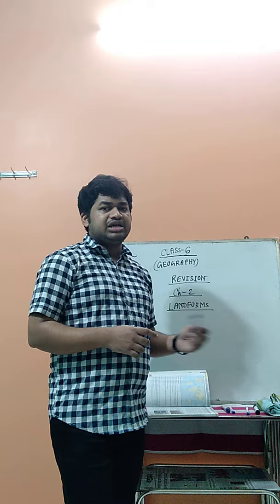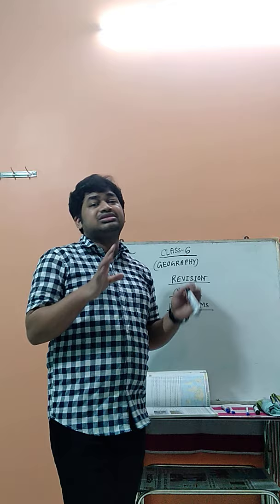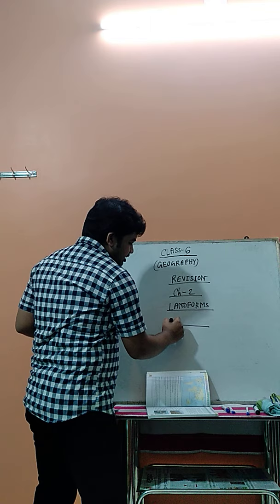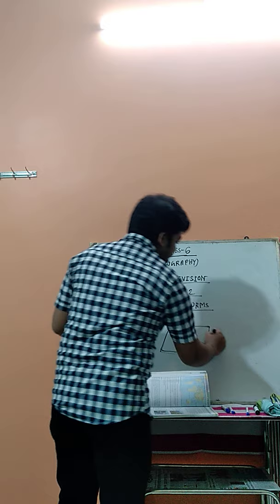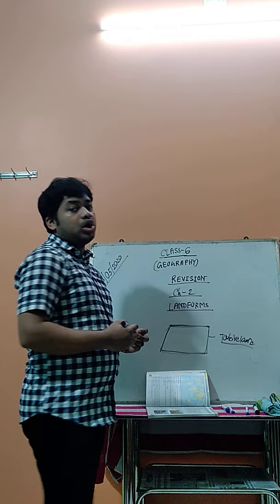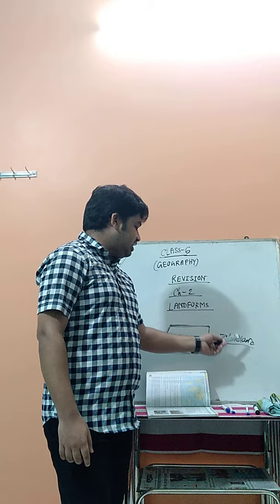What is a plateau? The plateaus are of different types. The plateaus are not all the same. When a plateau is formed, the middle portion is flat on top and both the sides are sloping areas — that is the plateau portion. That is why the plateau is also known as the tableland. The topmost part of the plateau is flat in nature or flat in shape, that is why the plateau is also known as the tableland.